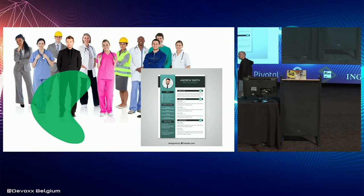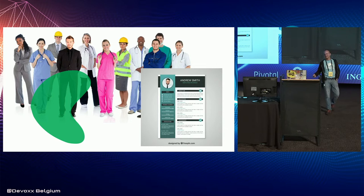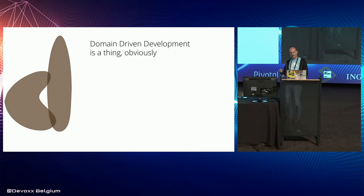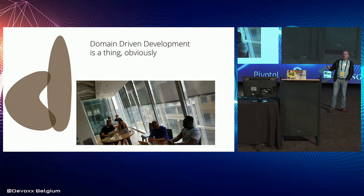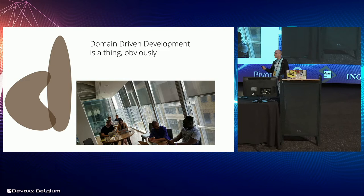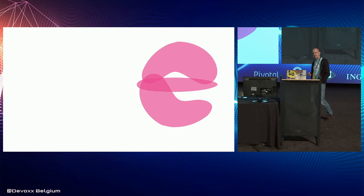C stands for career-driven development — you take a decision to use a technology so that your career improves. Closely related is CV-driven development, except you fully intend to leave the company. D is for domain-driven development — that's a real thing. Also, developer-driven development, when developers sit down and decide what they're going to do based on developer experience. We had this at a public sector company in the UK: we had Java microservices, everybody was bored, so we wrote all new microservices in Clojure. Six months later, those Clojure devs started leaving for higher-paid jobs and we couldn't afford to hire replacements.